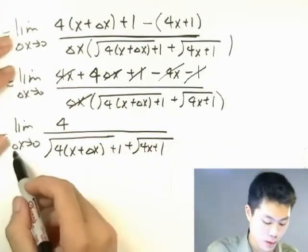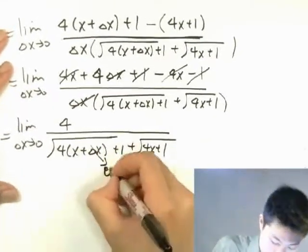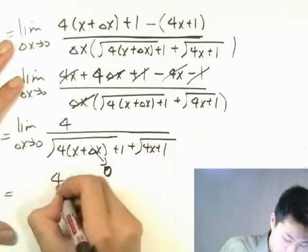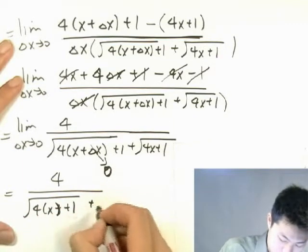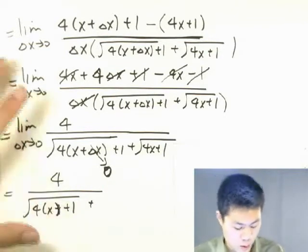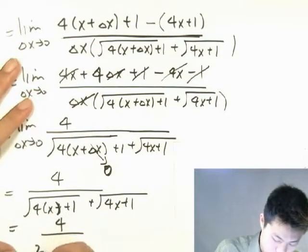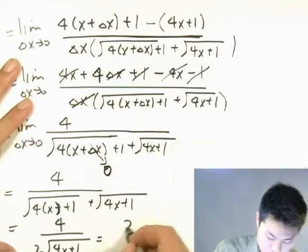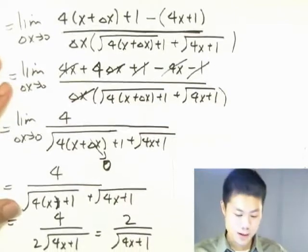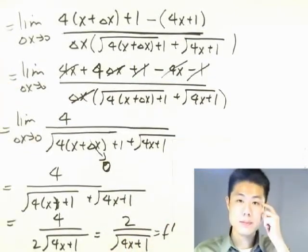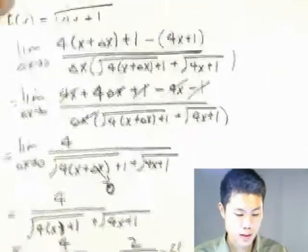So what we have left is the limit as delta x approaches zero of four over the square root of four times this quantity plus 1 plus the square root of 4x plus 1. Now we're going to take the limit. Delta x is going to be zero, so this term is going to drop out. What we have left is four over two times the square root of 4x plus 1, which is two over the square root of 4x plus 1. That's my answer, the derivative.